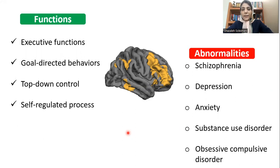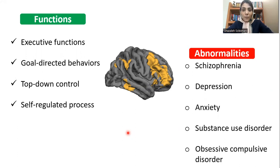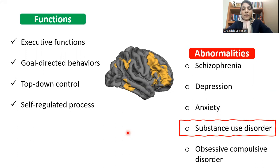We also know that several abnormalities in the frontal parietal network were observed in different neuropsychiatric diseases like depression, anxiety, obsessive compulsive disorder, schizophrenia, and substance use disorder. In this paper, we considered a group of participants with substance use disorder as a sample clinical population.